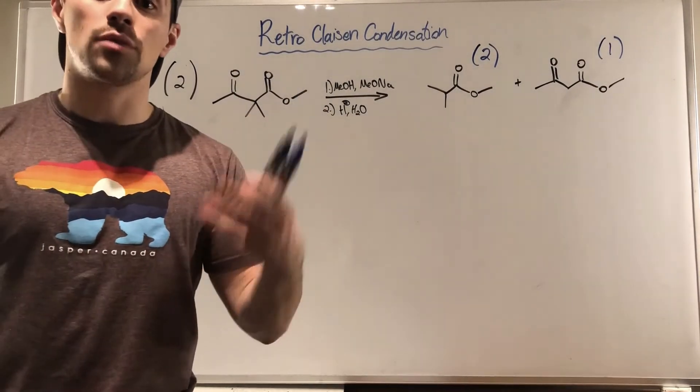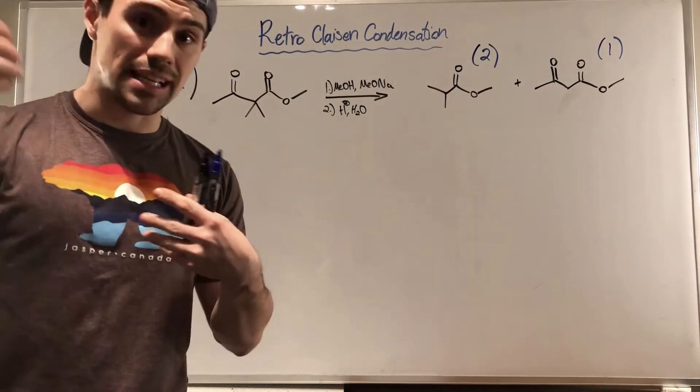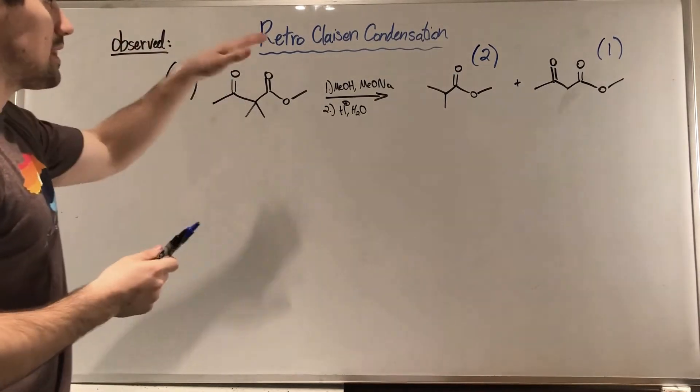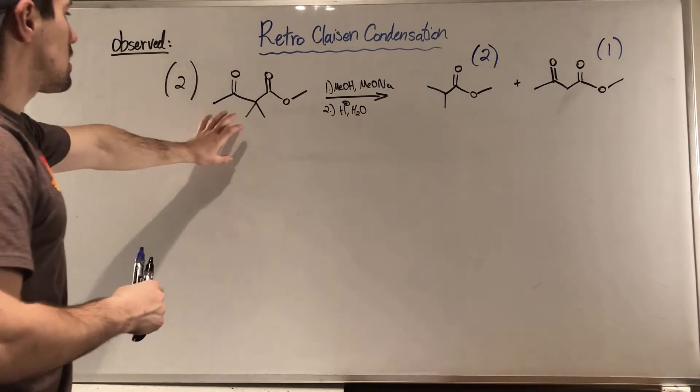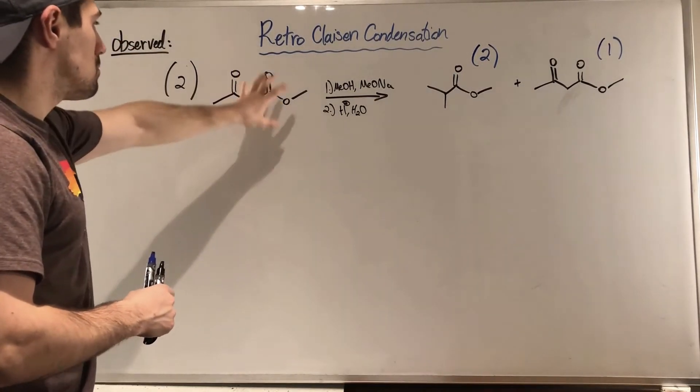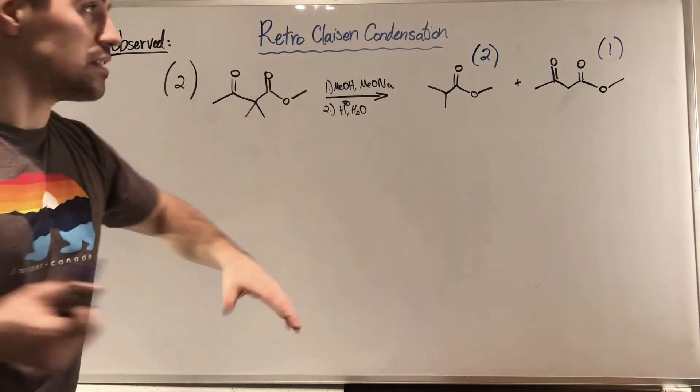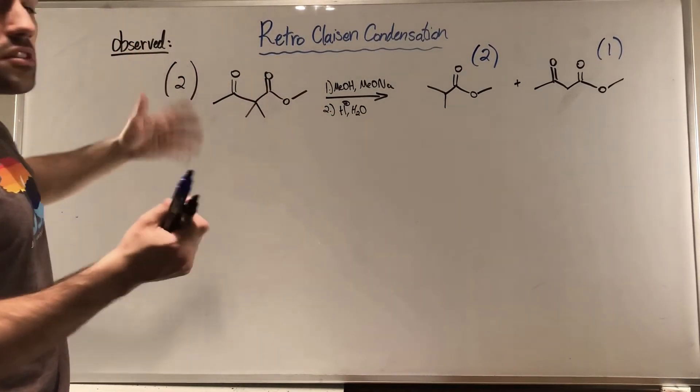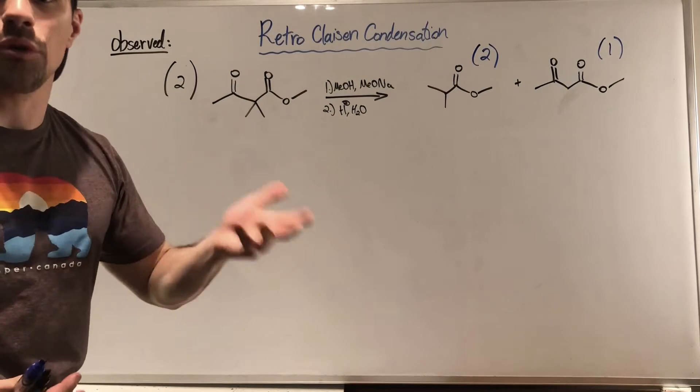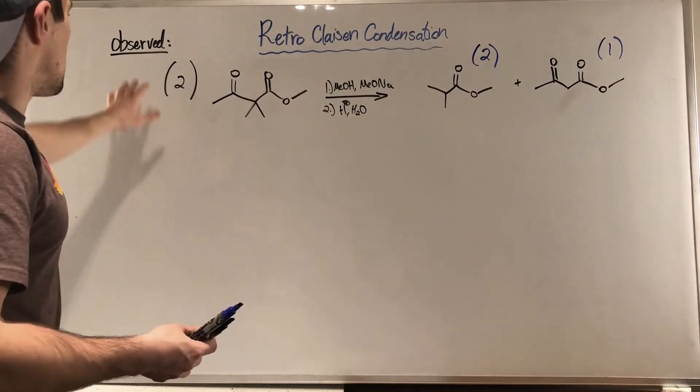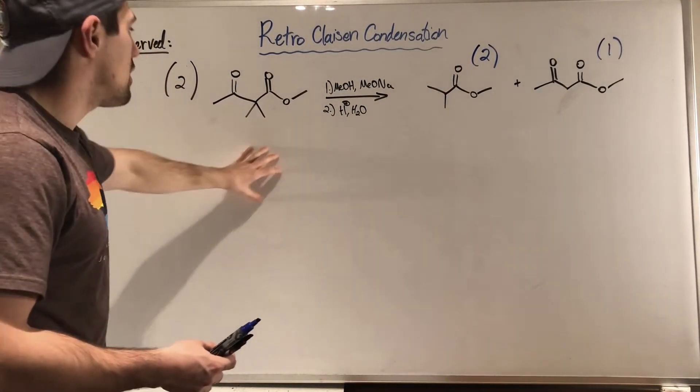Okay gang, so let's look at one more retro Claisen condensation example. So if we take a peek at this, you can see given this starting material, this reactant. This is from the textbook Vollhardt that Pitt uses.